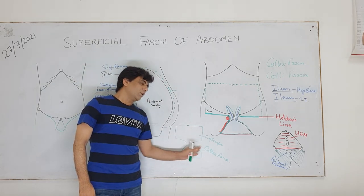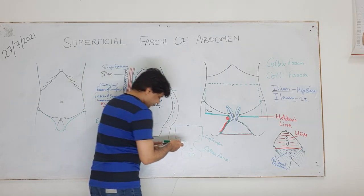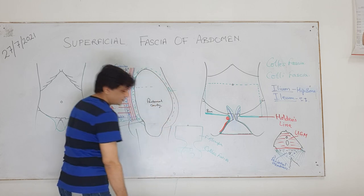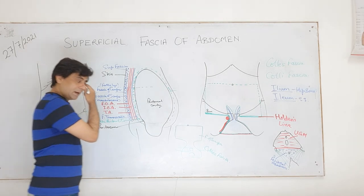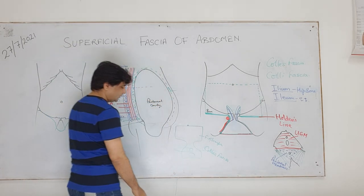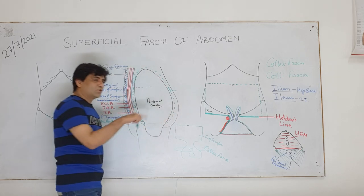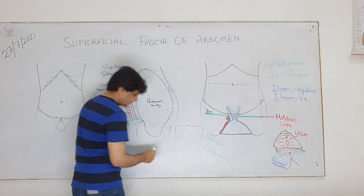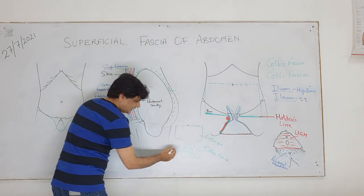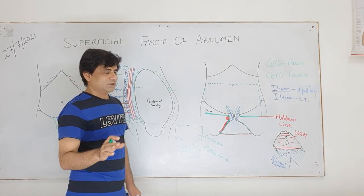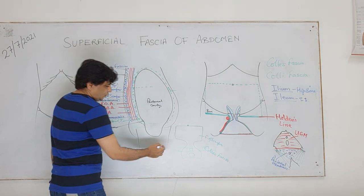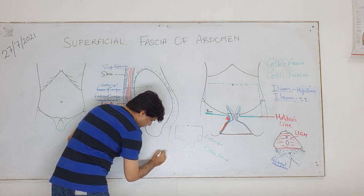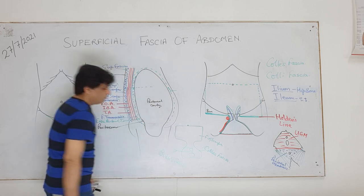This Colles' fascia - here is the penis that arises in the perineum, so obviously fascia Scarpa is also going to invest the penis or clitoris. This continuation of fascia covers everything. The extension of Colles' fascia in the penis is called Buck's fascia.